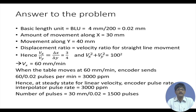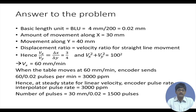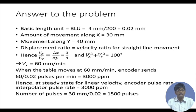Since the feed velocity is 100 mm/min, the resultant cutter path velocity is √(Vx² + Vy²) = 100. From this, we can calculate Vx = 60 mm/min. Once Vx is found using the BLU, we can determine the remaining required terms.